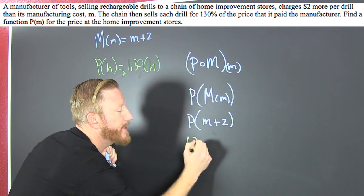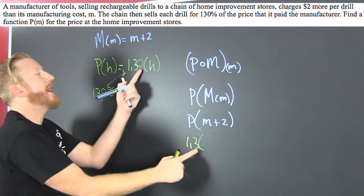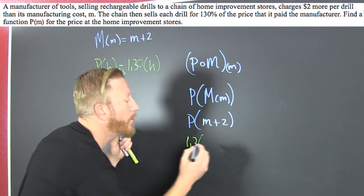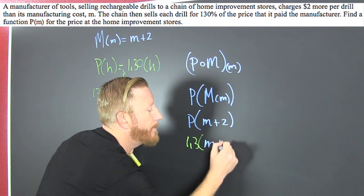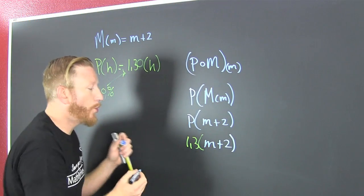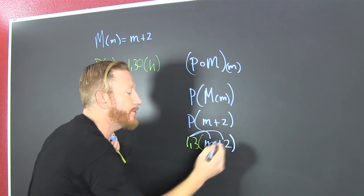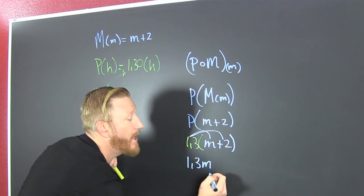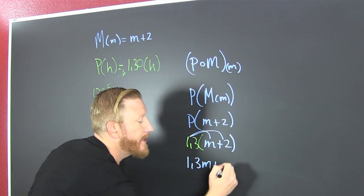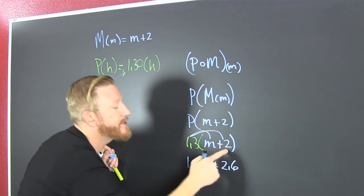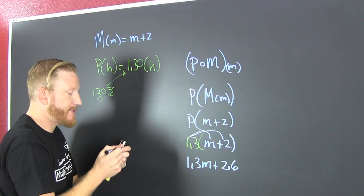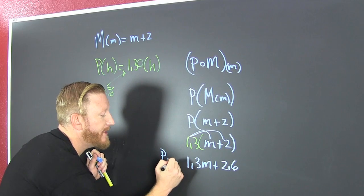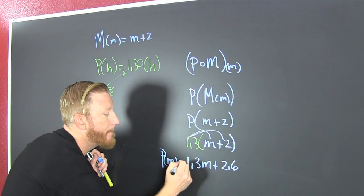Everywhere we saw an h, we're going to put m plus two. So this is 1.3 times — that's m plus two. That gives us 1.3m plus 2.6, because 2 times 1.3 is 2.6. And that's how we found our p of m.